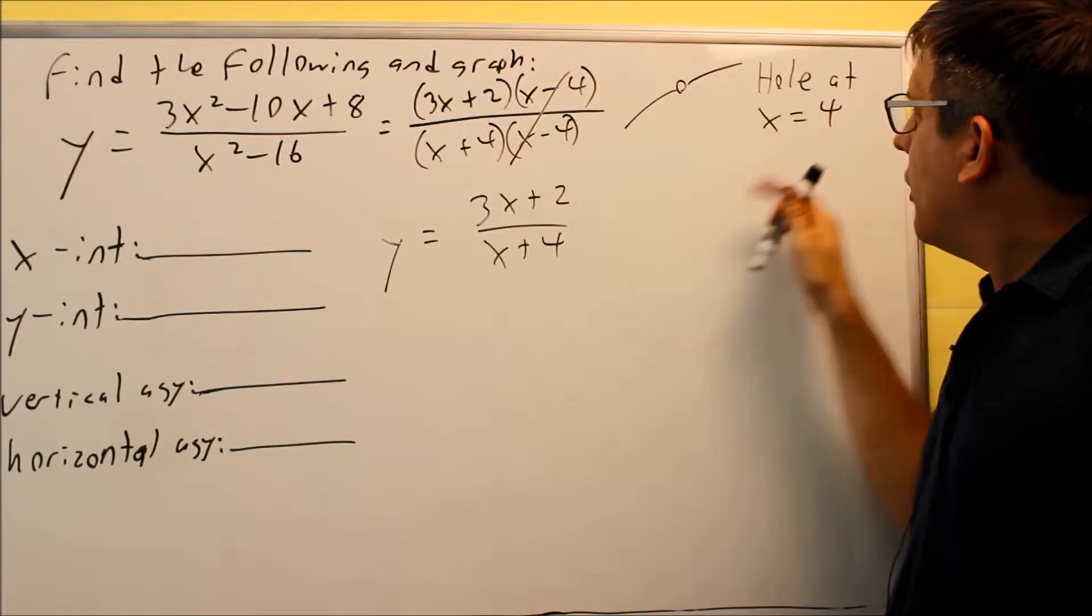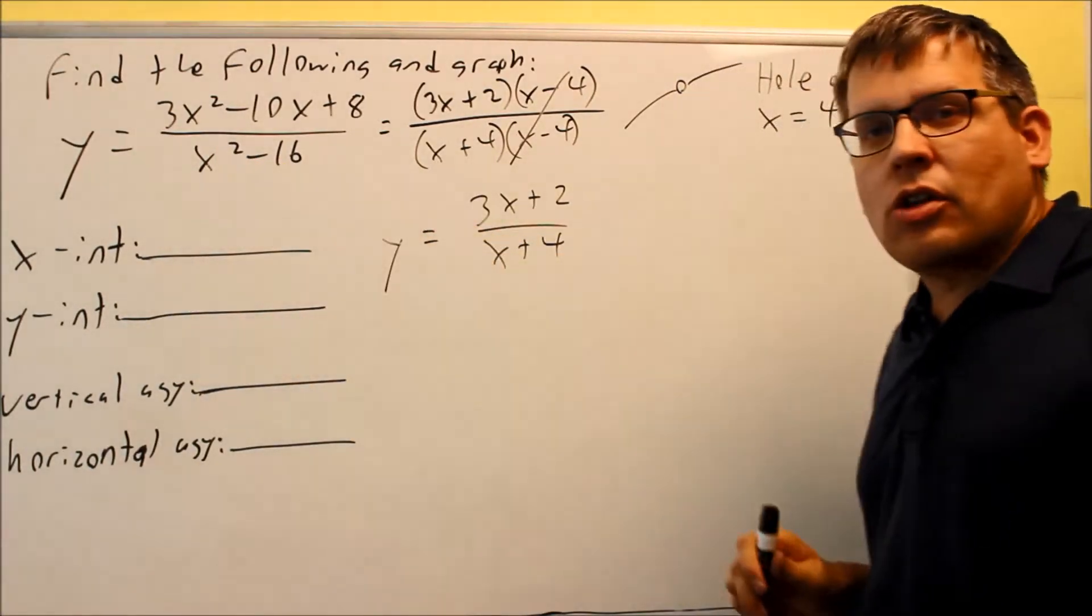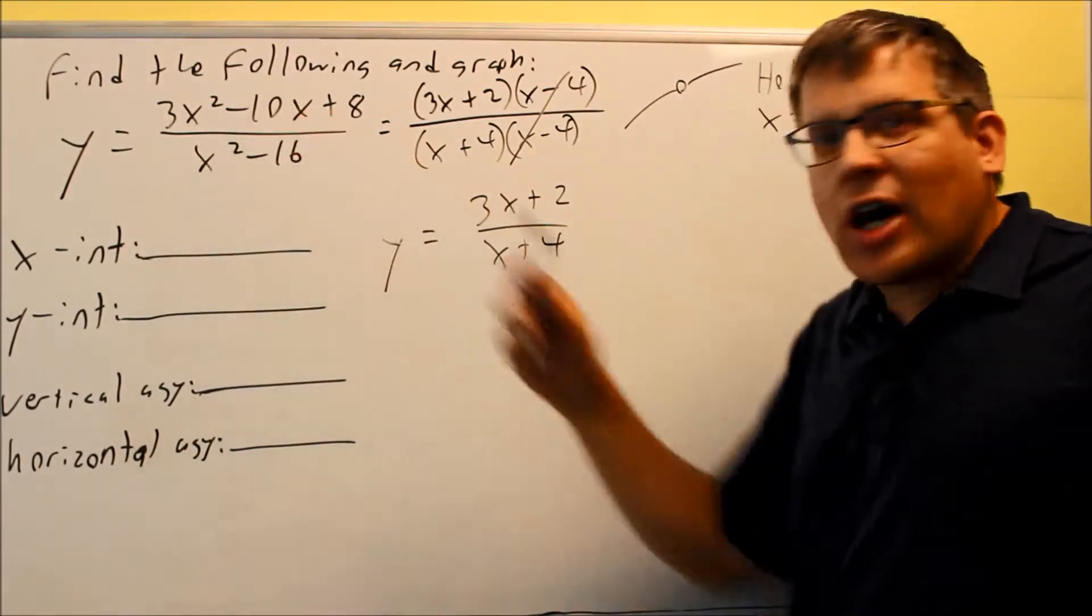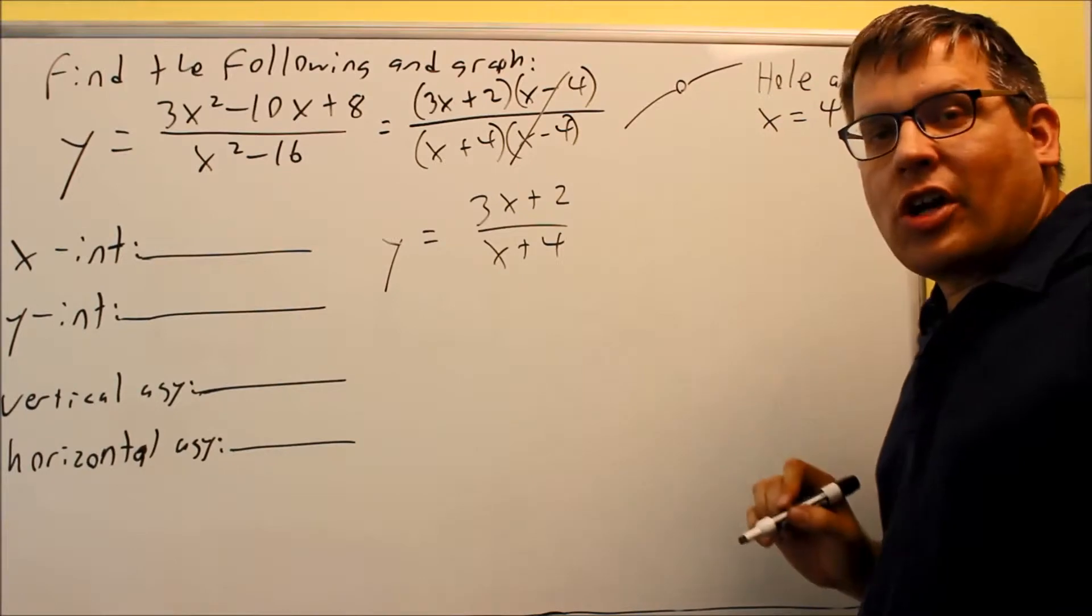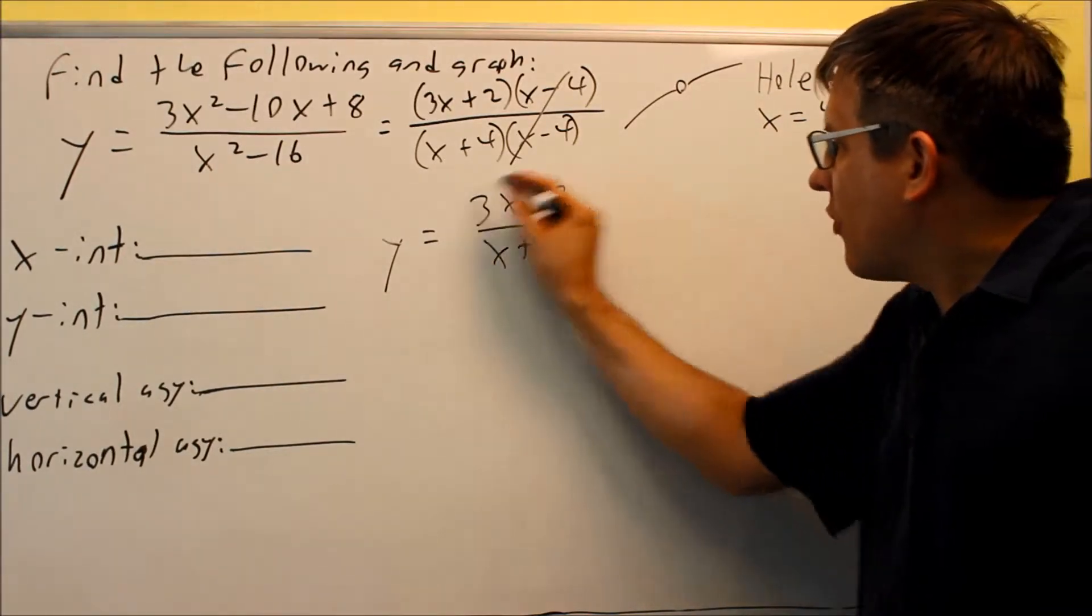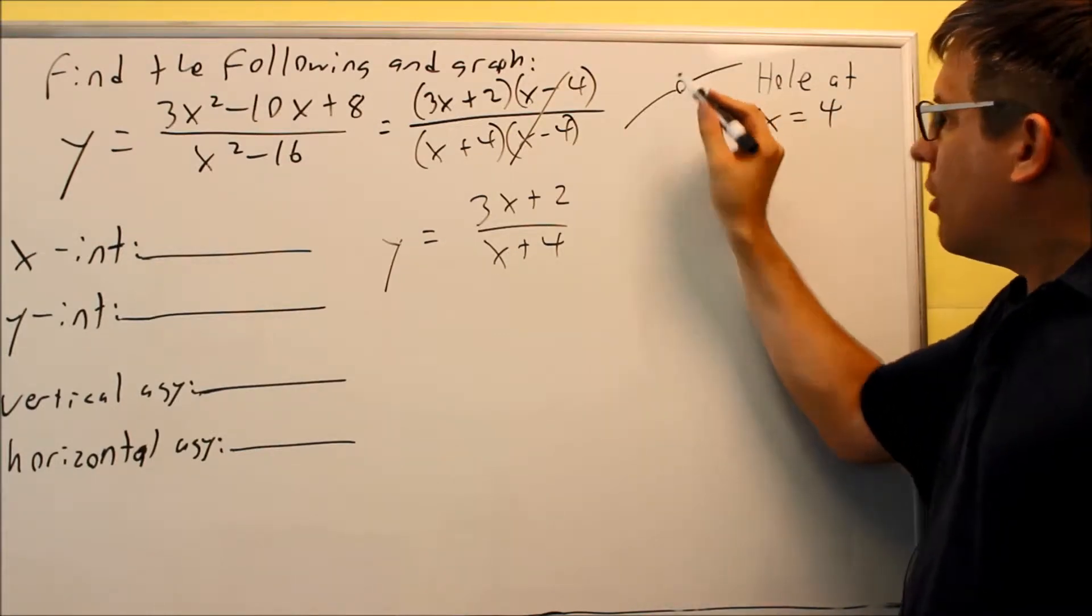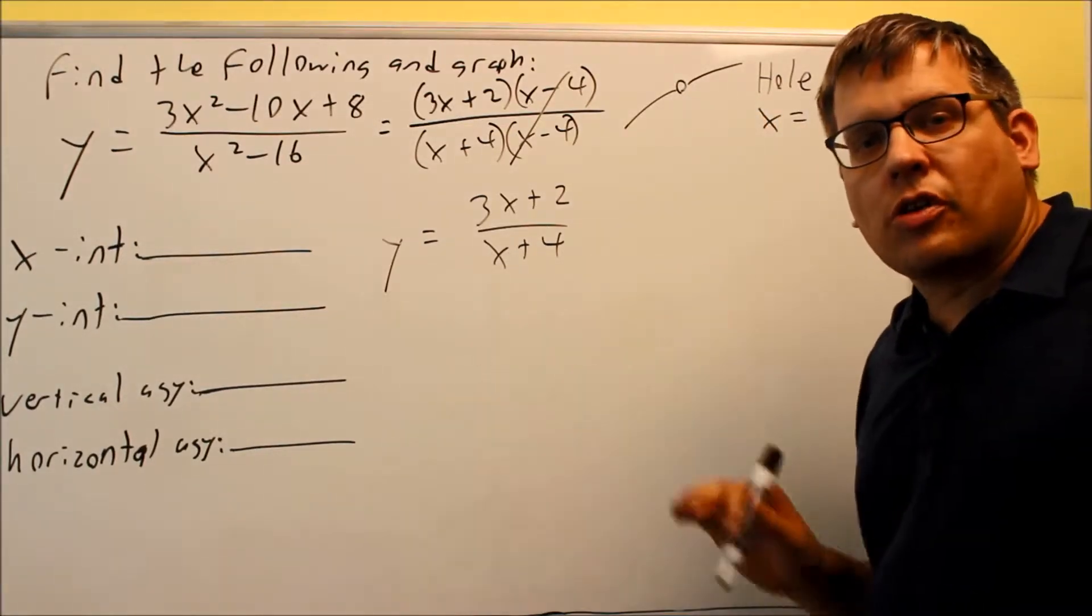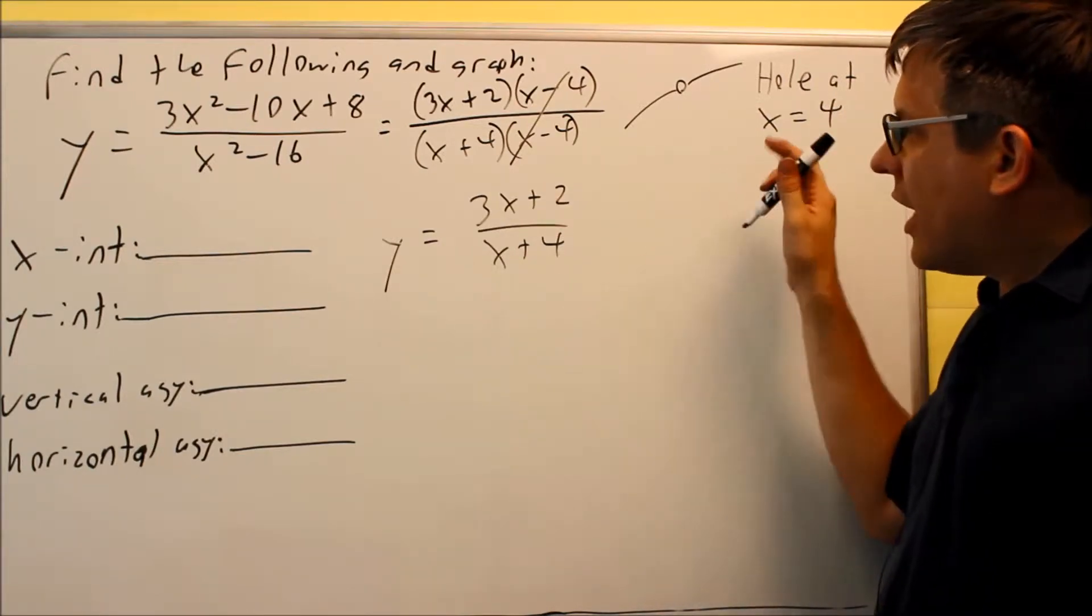Because again, the reason why that 4 cannot be included is because if I put 4 back into the original equation I'm dividing by zero. So I know that at 4 that point cannot exist in my graph, and the graph itself is going to look exactly like this one. However, all I'll do is when I'm at 4 I'm just going to go ahead and put an open circle in and we'll see that a little bit later when we do the graph.